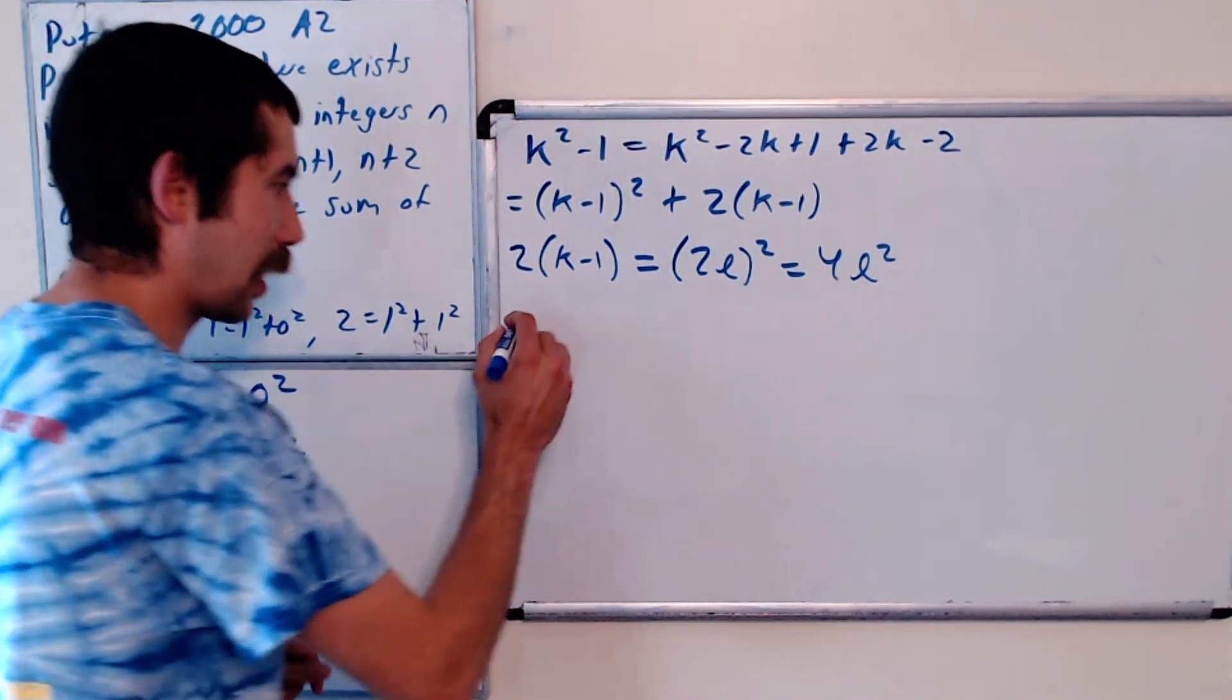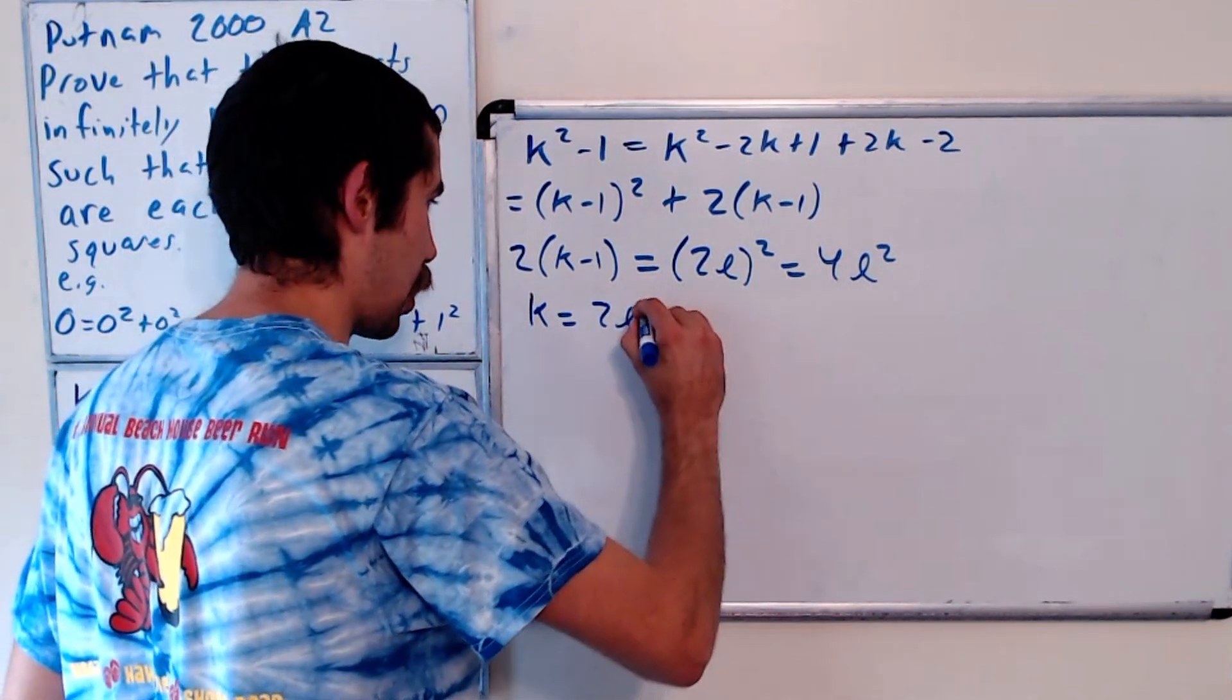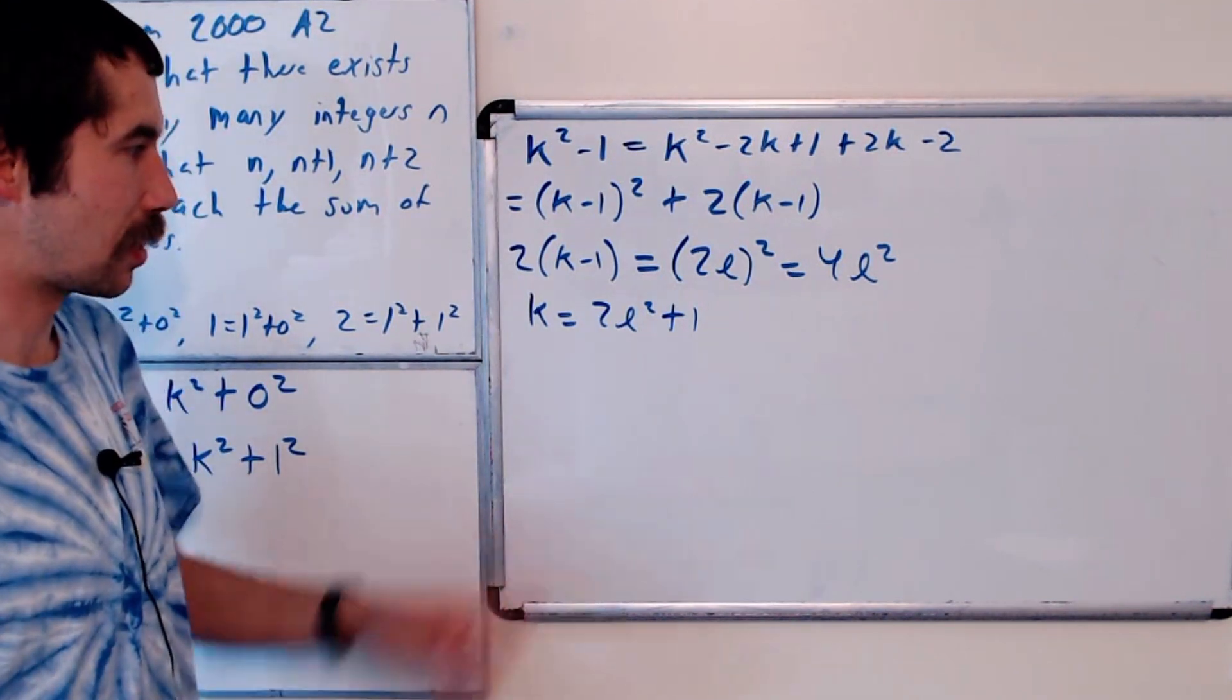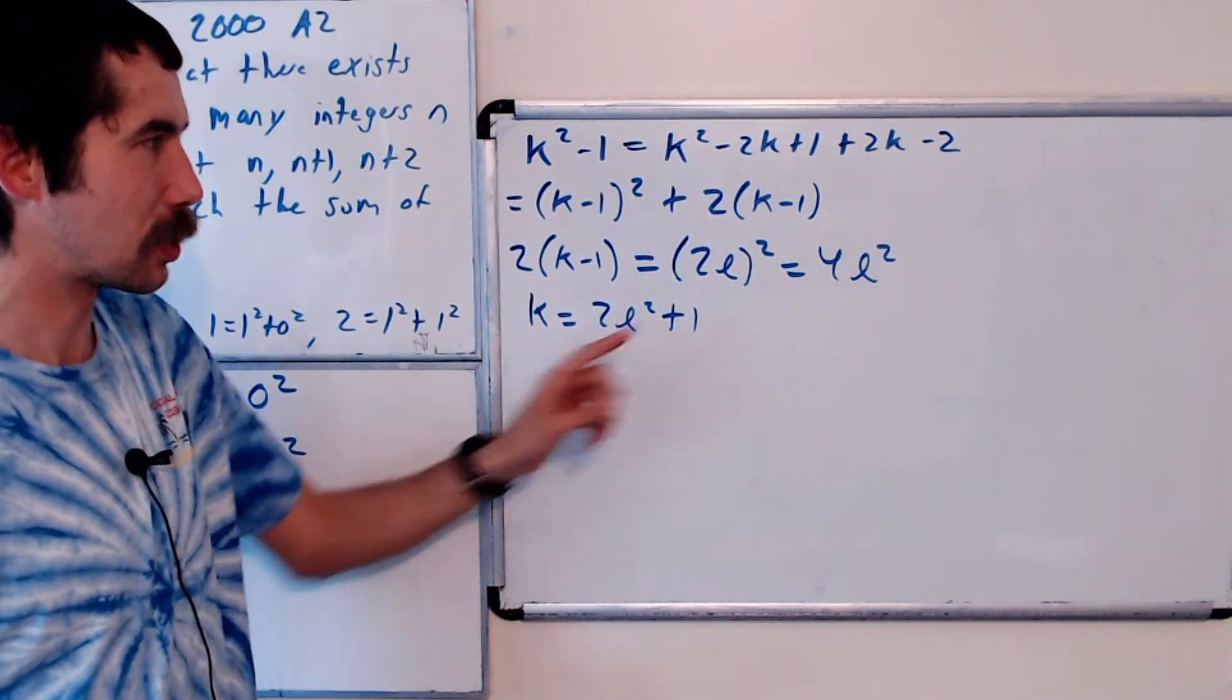So this is going to give us that k is equal to 2l squared plus 1. So whenever k is equal to 2l squared plus 1,